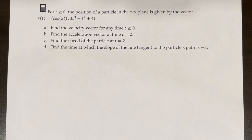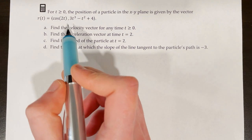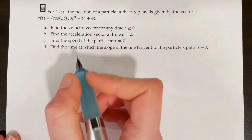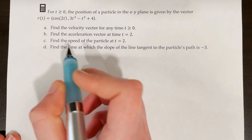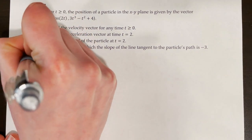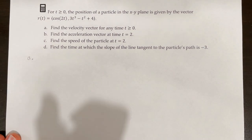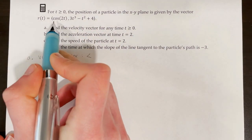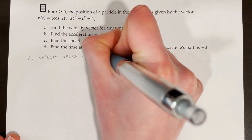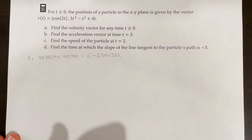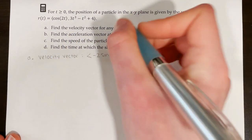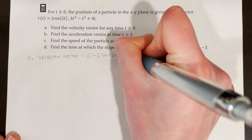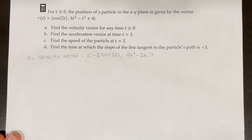Let's try a calculator free response question. For t ≥ 0, the position of a particle in the xy plane is given by r of t equals (cos(2t), 3t³ − t² + 4). Part a asks us to find the velocity vector for any time t ≥ 0. To find the velocity vector, we take the derivative of the position vector: the derivative of cos(2t) is −2 sin(2t), and the derivative of 3t³ − t² + 4 is 9t² − 2t.